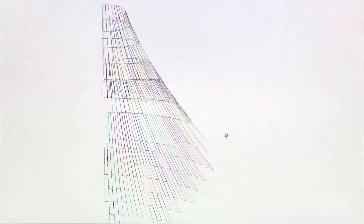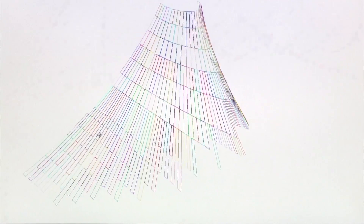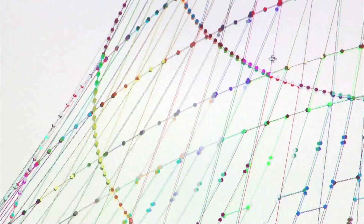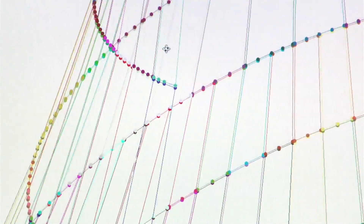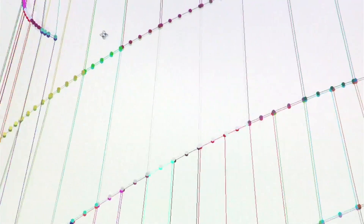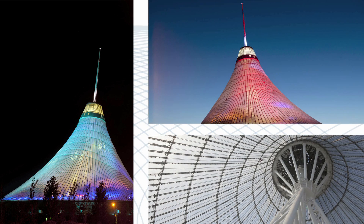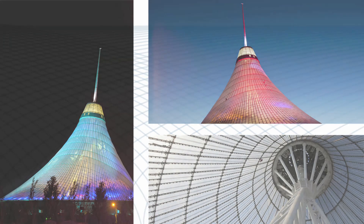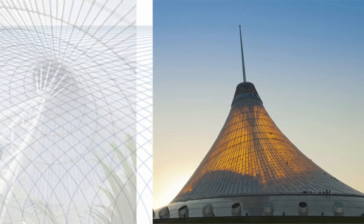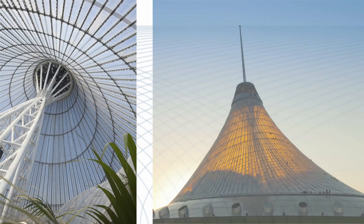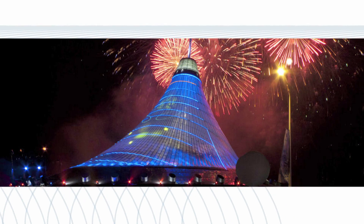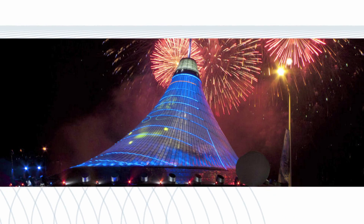Here's a look at Easy software at work, helping to create some well-known, truly spectacular structures. The Khan Shatir in Astana, Kazakhstan, is a huge transparent tent 150 meters high, constructed from ETFE cushions suspended on a network of cables strung from a central spire.